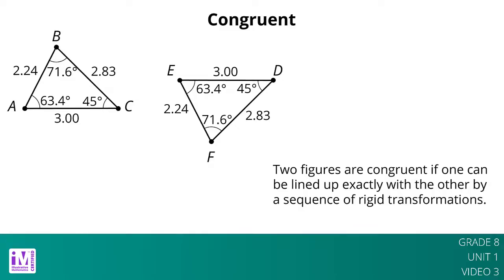A figure that looks like a mirror image of another figure can be congruent to it. This means there must be a reflection in the sequence of transformations that matches up the figures.